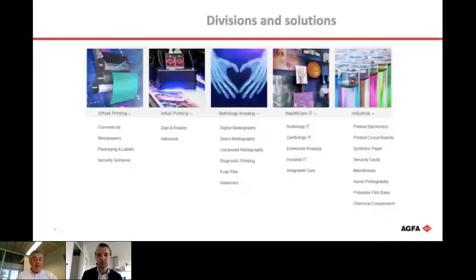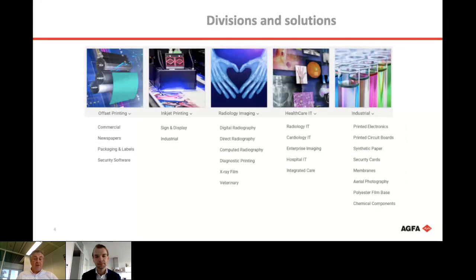The group has a divisional structure built around solutions in offset printing, newspapers, magazines, packaging, inkjet printing, radiology imaging, digital and direct computed X-ray, and IT solutions for the healthcare sector. Additionally, based on our long history, we offer derived industrial solutions such as printed electronics, circuit boards, synthetic papers, membranes, and security cards.